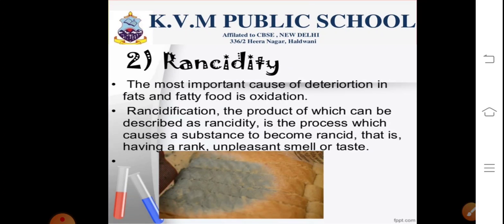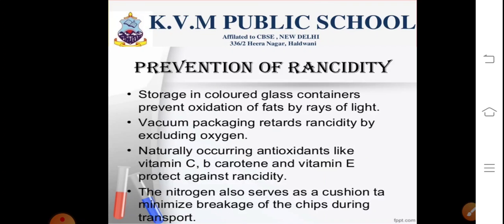Have you ever tasted or smelt fat or oil containing food materials left for a long time? When fats and oils are oxidized they become rancid and their smell and taste changes. Usually, substances which prevent oxidation — that is, antioxidants — are added to food containing fats and oils. Keeping food in air-tight containers helps to slow down the process of oxidation. Storage in colored glass containers can also be done to prevent oxidation of fats. Vacuum packaging also retards rancidity.